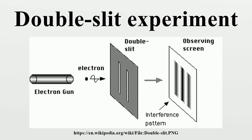If light consisted strictly of ordinary or classical particles, and these particles were fired in a straight line through a slit and allowed to strike a screen on the other side, we would expect to see a pattern corresponding to the size and shape of the slit. However, when this single-slit experiment is actually performed, the pattern on the screen is a diffraction pattern in which the light is spread out. The smaller the slit, the greater the angle of spread.